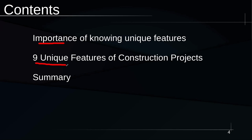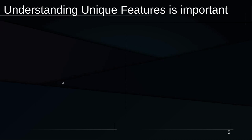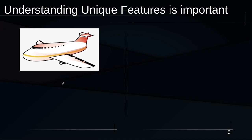First, let us understand why it is important to understand unique features. Take the example of an aeroplane. What are the unique features of an aeroplane that come to your mind? Well, it's quite fast. It can travel from one place to another — it doesn't matter what's in between, whether it's a busy street, a large desert, or many seas. The aeroplane moves from its origin to destination quite fast.